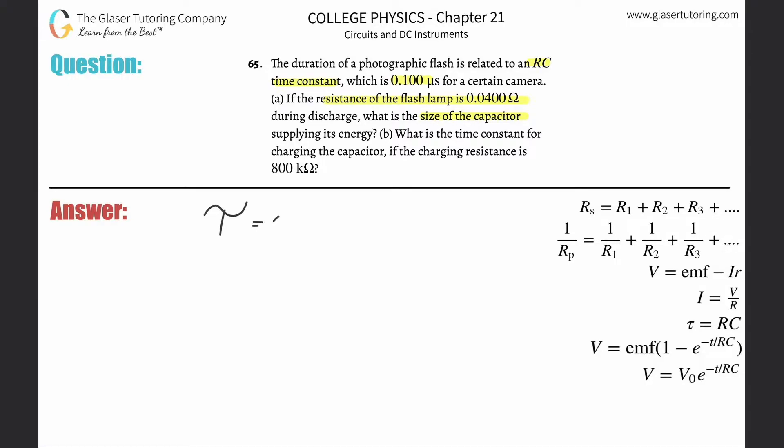in seconds, so just multiply that by 10 to the minus 6. They also told us the resistance inside this particular flash lamp is 0.04 ohms, and they want to find the capacitance. How are these three variables related?